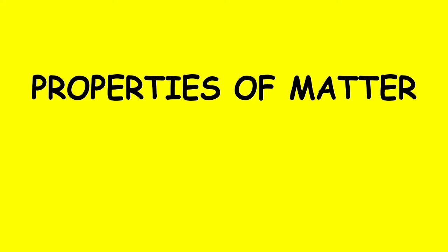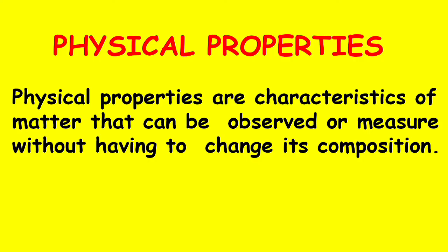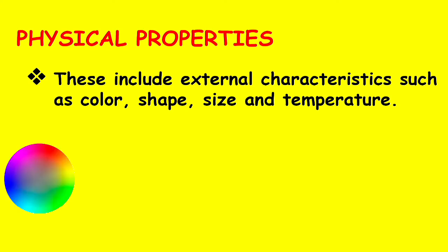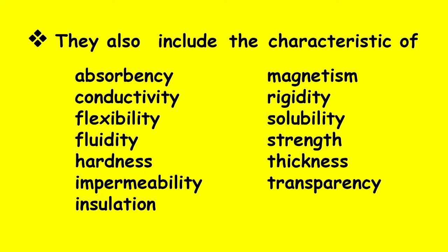Properties of matter can be classified into physical properties and chemical properties. Physical properties are characteristics of matter that can be observed or measured without having to change its composition. These include external characteristics such as color, shape, size, and temperature. They also include the characteristics of absorbency, conductivity, flexibility, fluidity, hardness, impermeability, insulation, magnetism, rigidity, solubility, strength, thickness, and transparency.